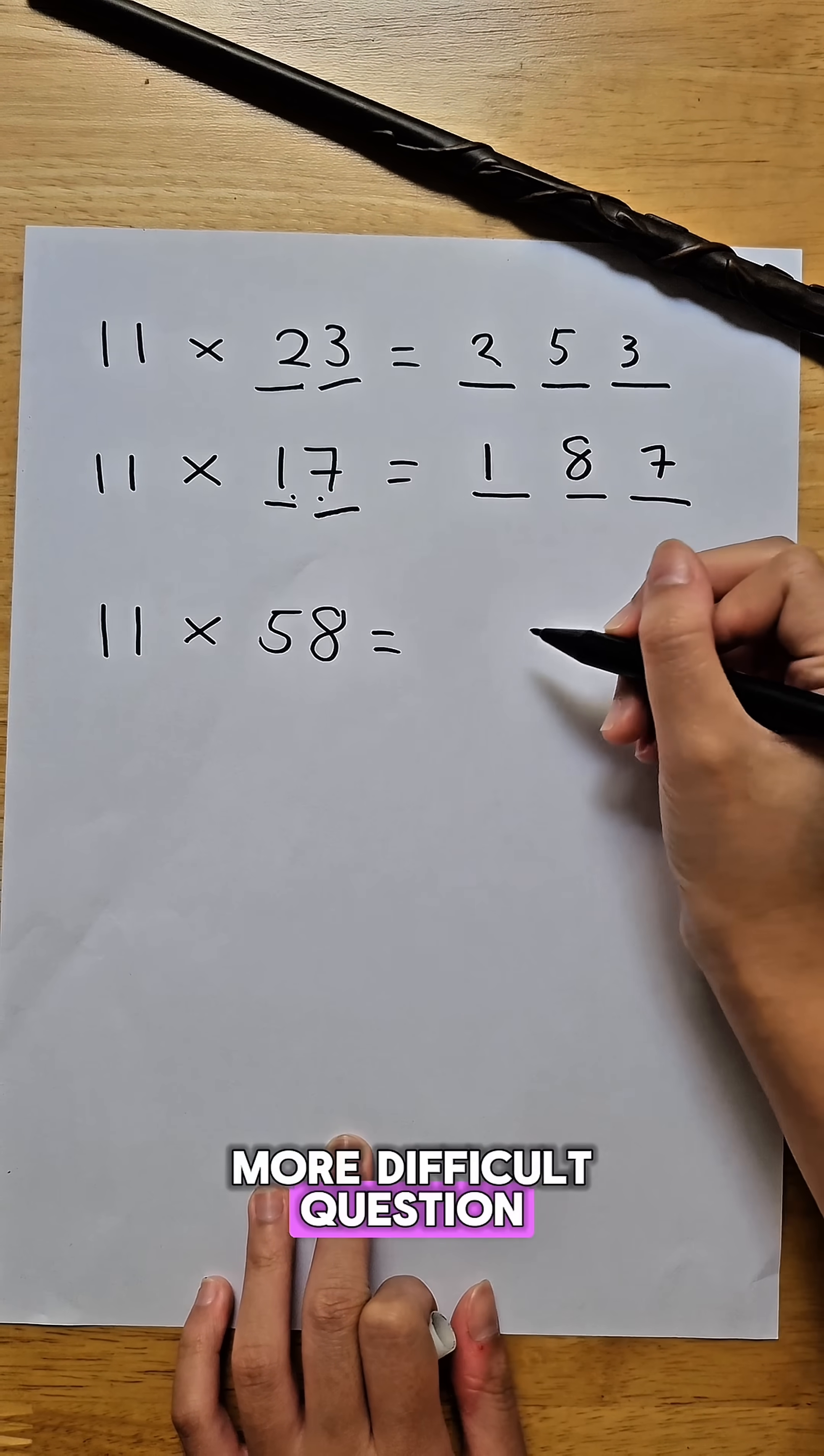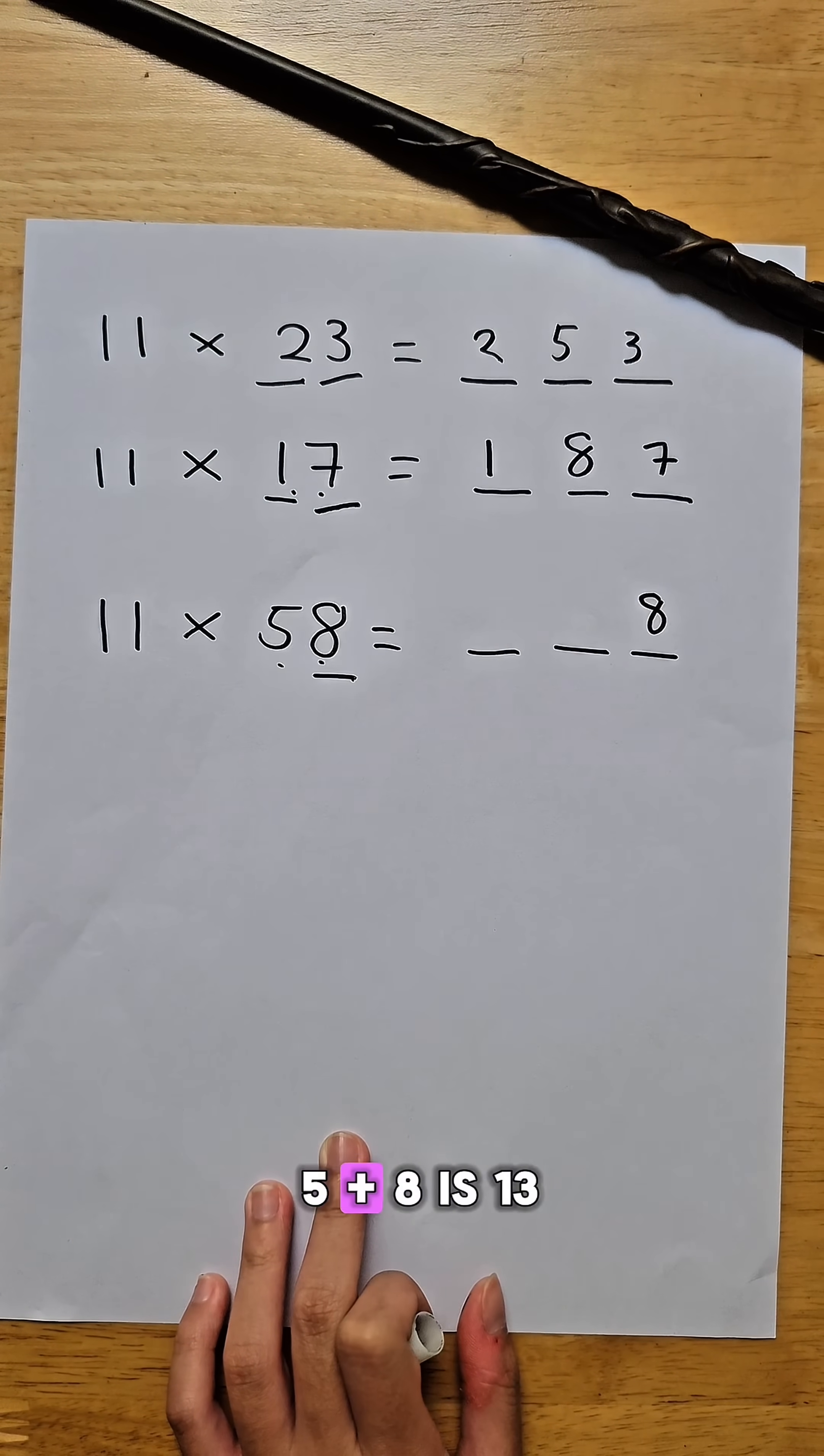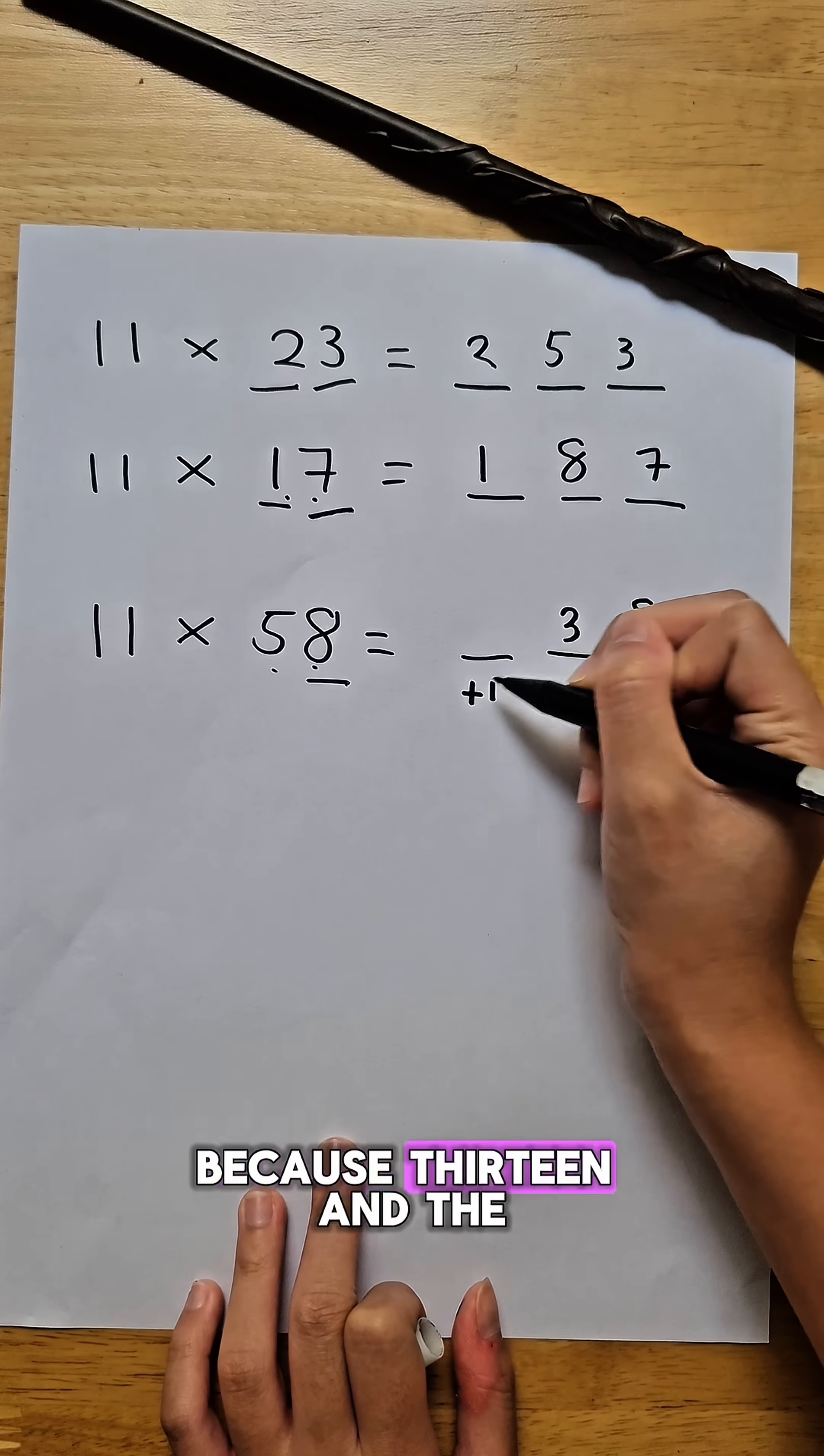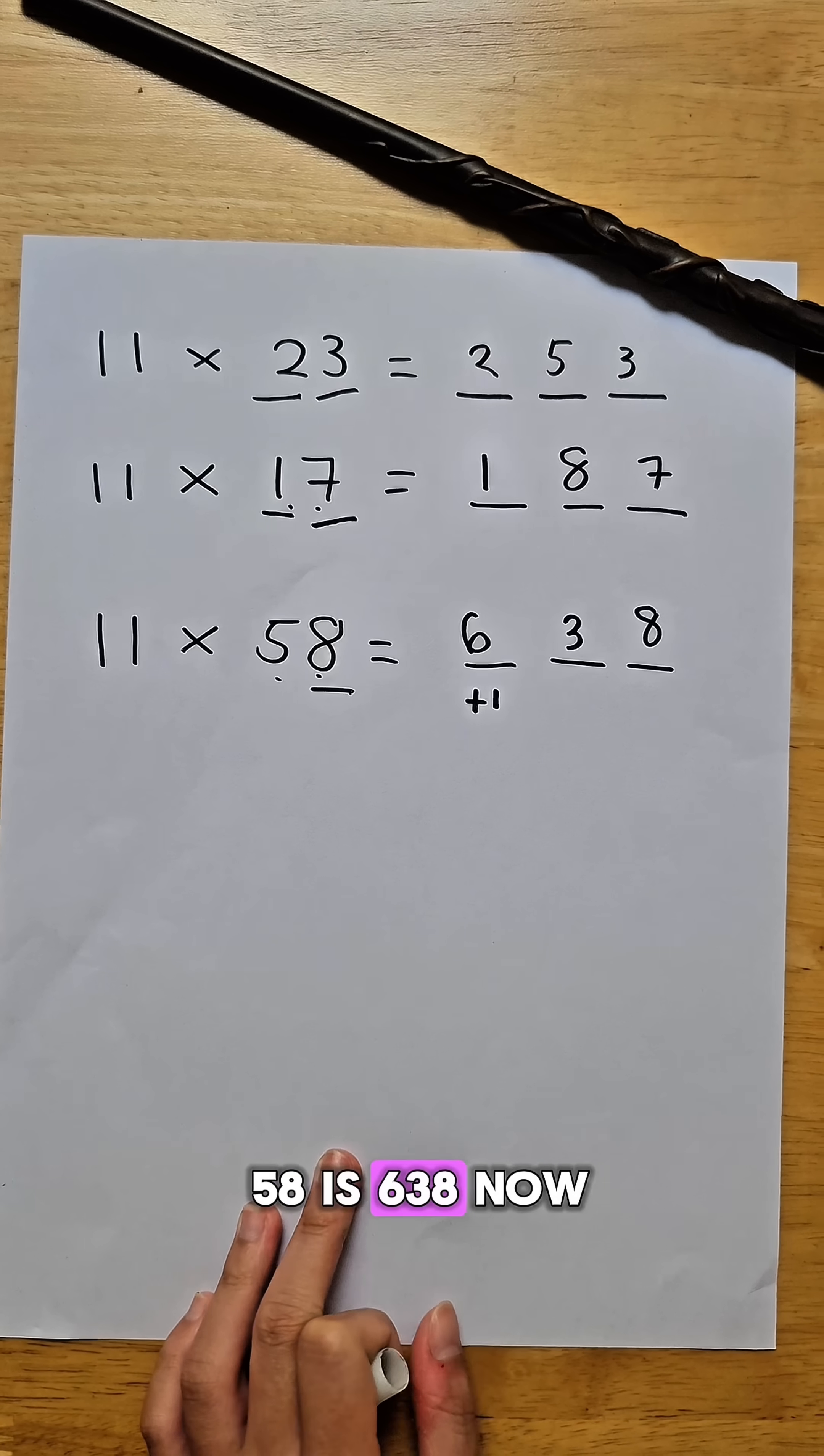Now let's try a more difficult question. Draw the three lines. The first line will be 8. Add these two numbers. 5 plus 8 is 13. Remember, we cannot put two digits in one line. We only can put one digit in one line. So we put here 3. And remember, plus 1, because 13. And the hundreds place will be 5. 5 plus 1 is 6. So 11 times 58 is 638.